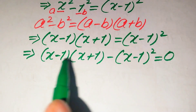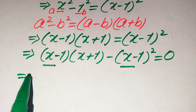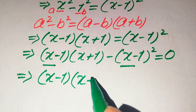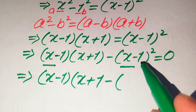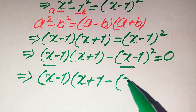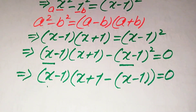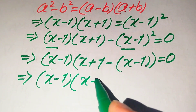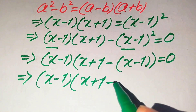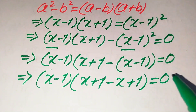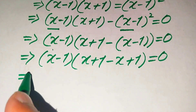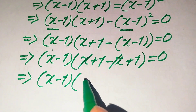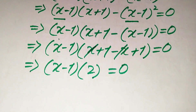Both terms involve (x - 1), so we take (x - 1) as a common factor. After factoring, we get (x - 1) times [(x + 1) - (x - 1)] equals 0. Distributing the negative sign gives (x - 1)(x + 1 - x + 1) equals 0, and simplifying, the x terms cancel and 1 + 1 becomes 2, giving (x - 1)(2) equals 0.